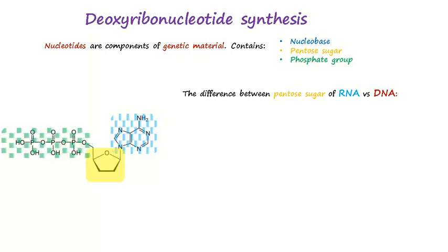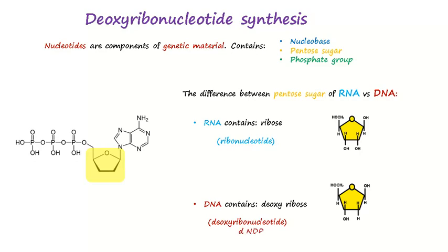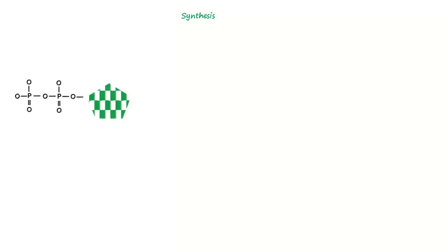There is an important difference between the pentose sugar of RNA and DNA. RNA has a ribose pentose, so its nucleotide is named ribonucleotide, while DNA has a deoxyribose pentose and its nucleotide is named deoxyribonucleotide. The ribose sugar has a hydroxide group at the second carbon position, while deoxyribose has only one hydrogen at the second carbon position — it lacks the oxygen, which gives origin to the name deoxyribonucleotide.